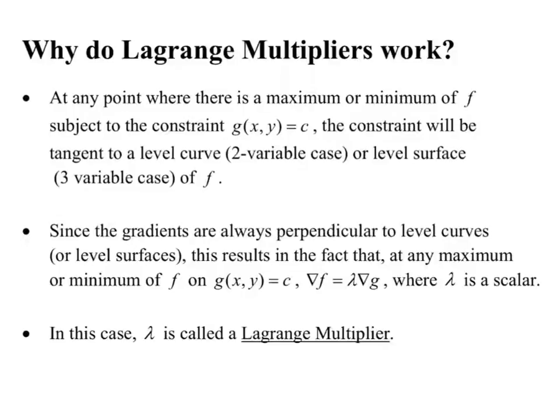Lagrange multipliers work because at any point where there's a maximum or minimum of f subject to the constraint, the constraint will be tangent to a level curve of f, or a level surface of f, depending on whether you're in the two-variable or three-variable case. Gradients are always perpendicular to level curves or level surfaces, and what happens is that at any maximum or minimum, because g is tangent to f, we're going to have that the gradients are parallel.